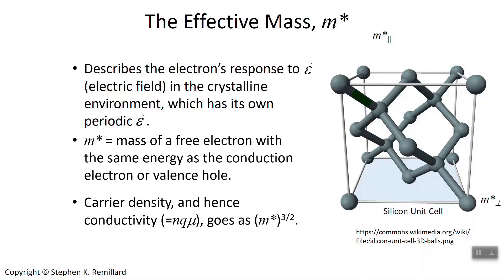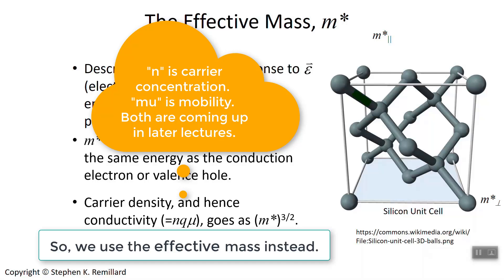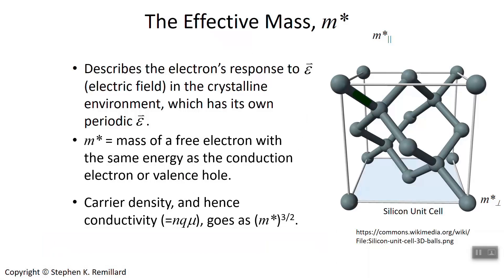For example, the conductivity, which is linear in the carrier density, and the carrier density n — the number of electrons per unit volume — goes as the mass to the three halves, so we use the reduced mass instead. This is going to come up a lot, especially during chapter 2 when we're dealing with transport properties. There the mass is involved in all sorts of calculations, and we always have to use the effective mass.